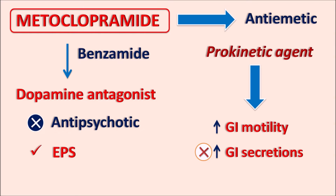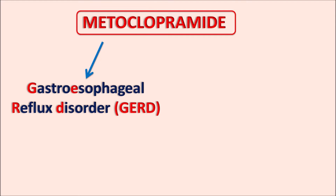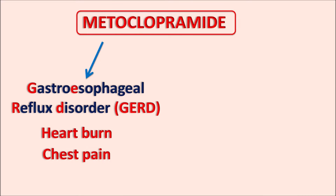Metoclopramide is used in conditions where it reduces reduced GI motility. One important use is the treatment of GERD — gastroesophageal reflux disorder — a condition of gastric reflux associated with heartburn, chest pain, and irritation in the esophagus. Metoclopramide increases GI motility, reduces gastric reflux, and adjusts the lower esophageal sphincter pressure to prevent reflux.